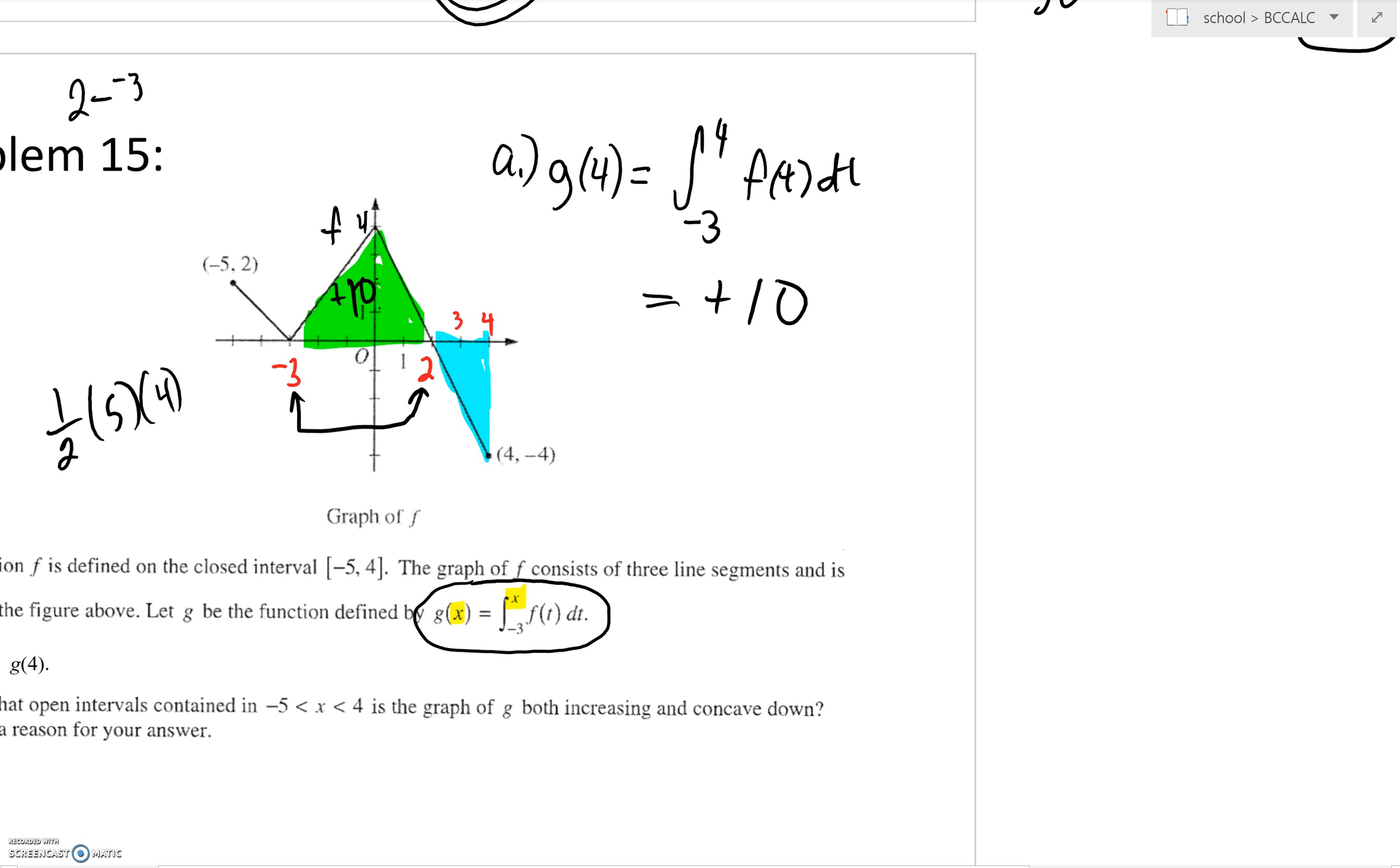There's also this blue triangle here. From 2 to 4 would be a base of 2. What about this height? That's a negative 4. So one half base times height: half of 2 is 1, times negative 4. So 10 and this negative 4 equals 6.